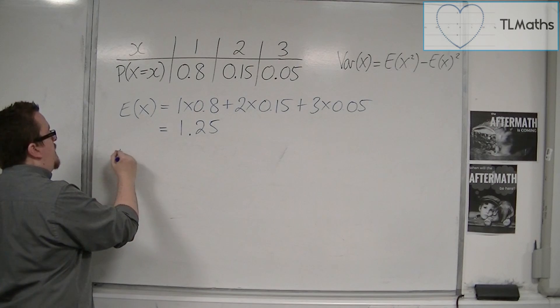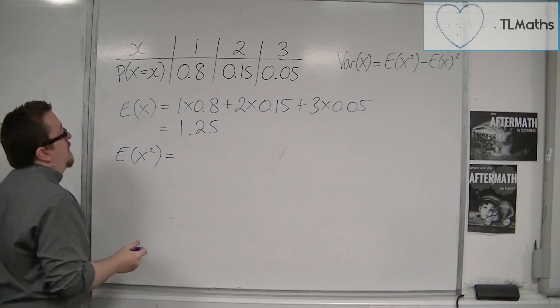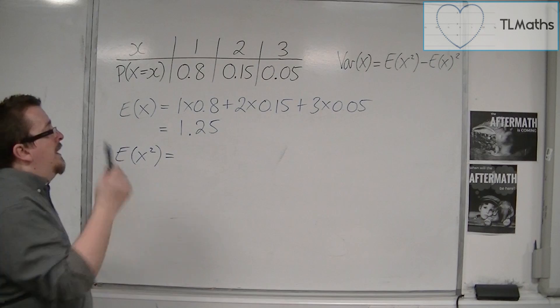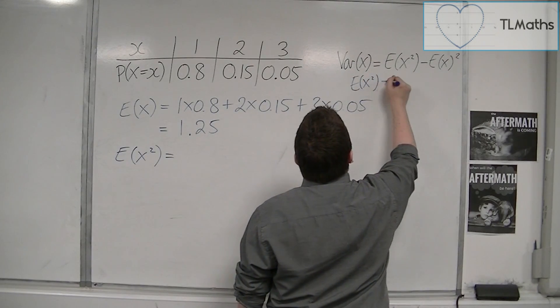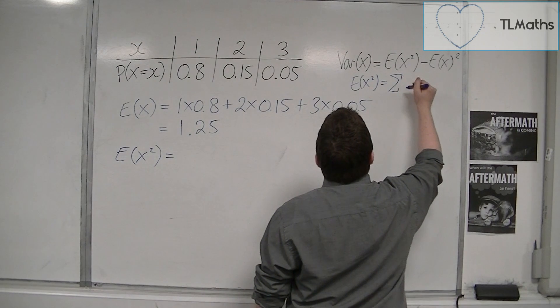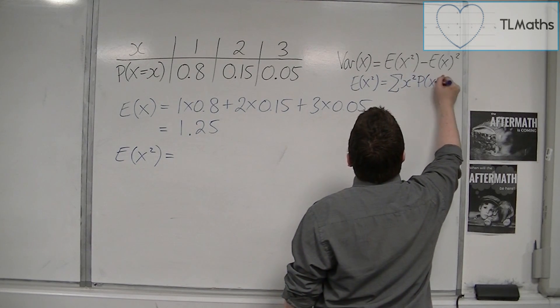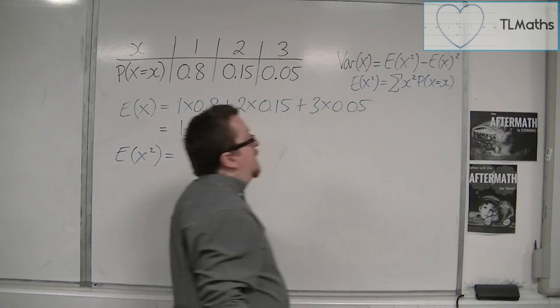We then need E of X squared. In this case, if we remember the formula for E of X squared, this is the sum of each of the X values squared times their respective probabilities.